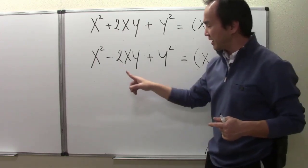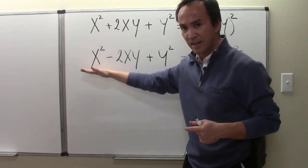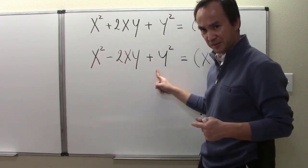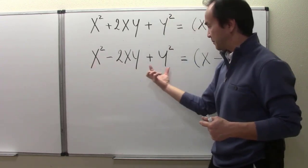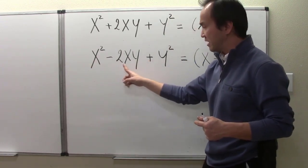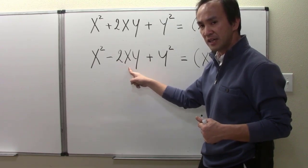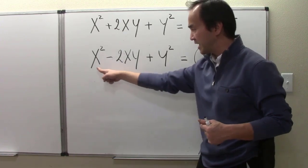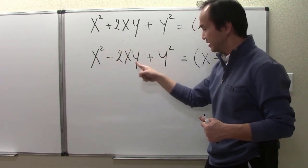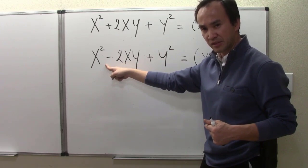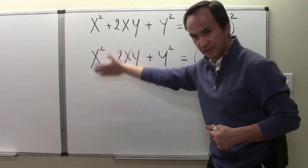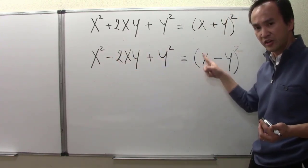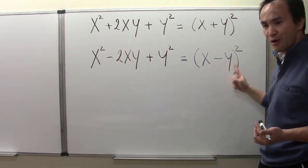Similarly, as long as we recognize in our polynomial the starting term and ending term — both positive and both perfect squares — and the middle term has that two times x times y with a negative sign, then if we recognize our polynomial in this form, after factoring we should end up with (x − y) squared.